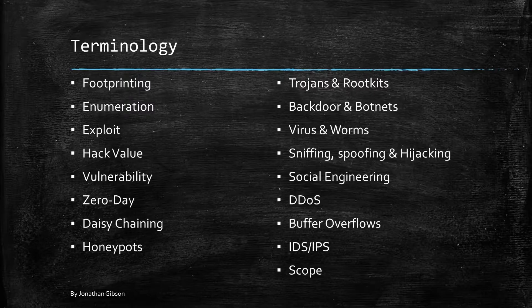Trojans and rootkits: a trojan is malicious software used to hack into a computer by misleading users of its true intent. The idea is based off the Greek story of the Trojan horse. A rootkit is a set of software tools that enable an unauthorized user to gain control of the computer system without being detected.